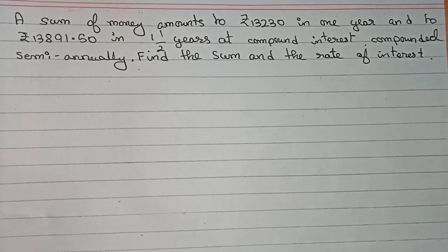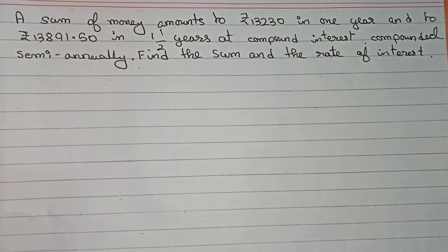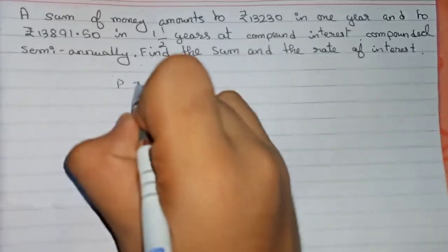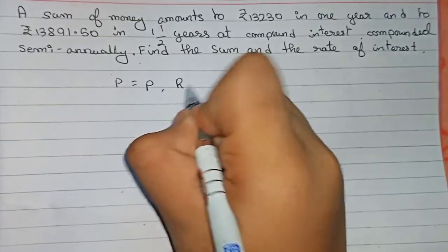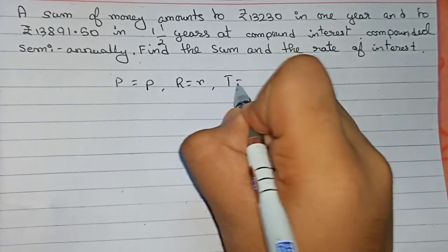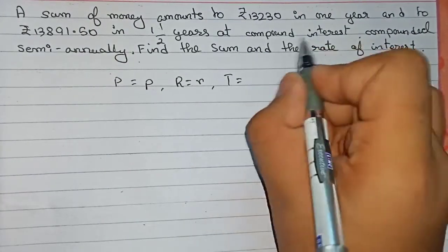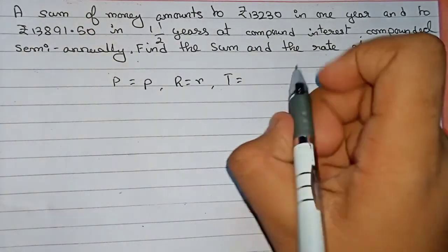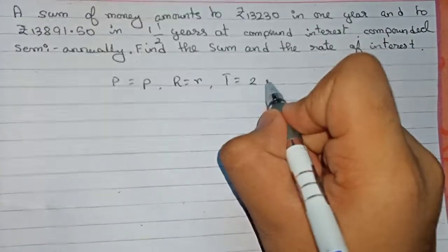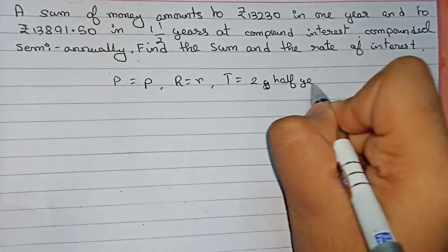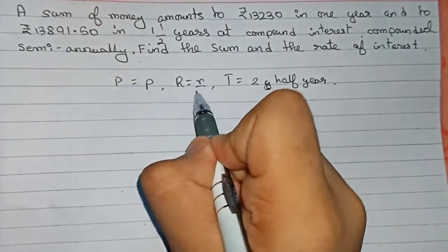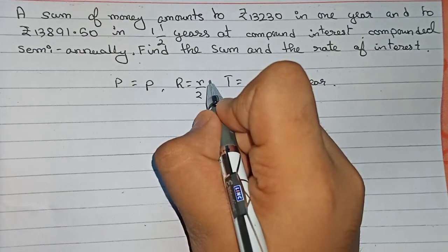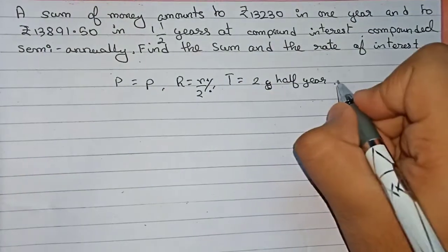To solve this question we need to form two equations. For the first equation, time is one year. Principal is unknown — write it as P. Rate of interest is also unknown — write it as r. Since interest is compounded semi-annually, time becomes one times two equals two half-years, and the rate becomes r by two percent.